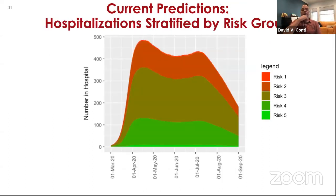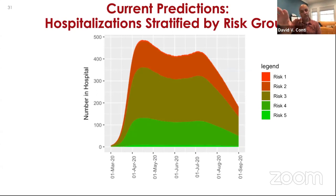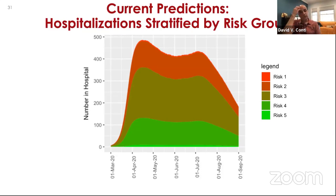Taking the overall hospitalization pattern and mapping it to risk-stratified groups — using LA County population prevalence of each risk profile and their corresponding probabilities — shows how projected hospitalizations break out across five risk categories. Risk category three is the largest group, but there are substantial numbers in the higher-risk categories one and two, and also hospitalizations from lower-risk categories, consistent with real data.